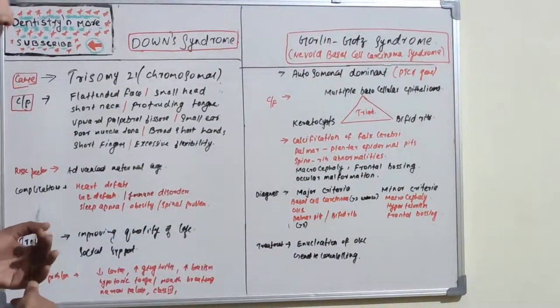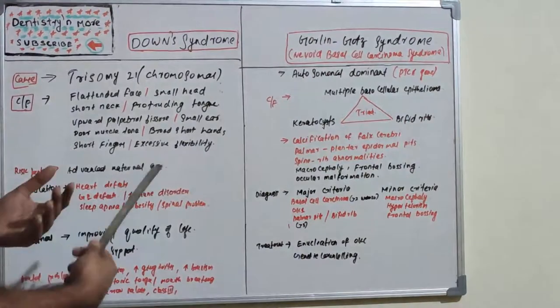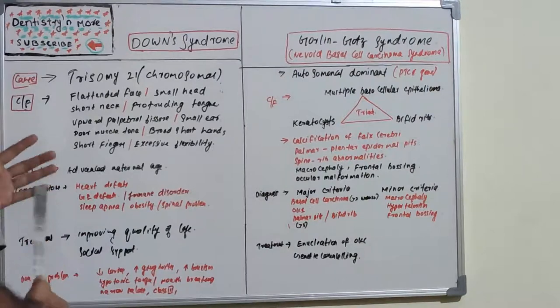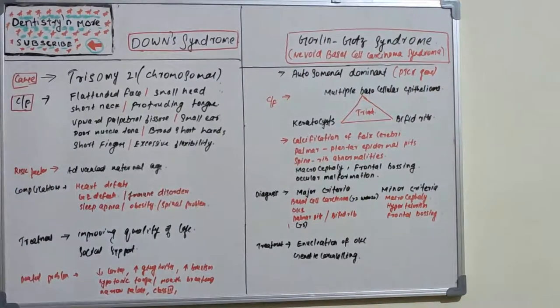Genetic counseling can also be done as a preventive measure. These are two genetic disorders: Down syndrome and Gorlin-Gott syndrome.